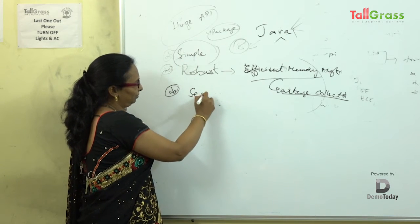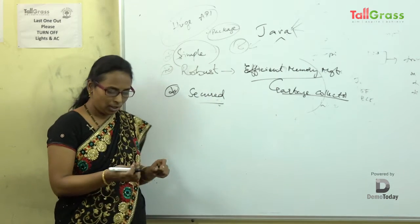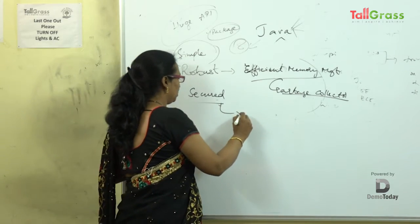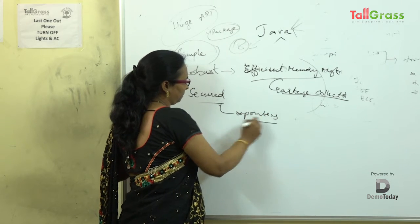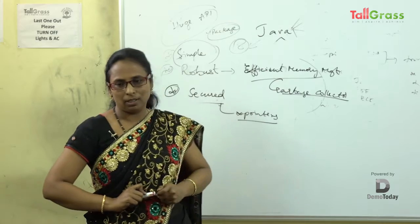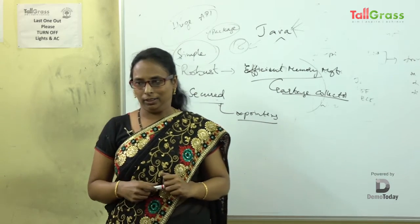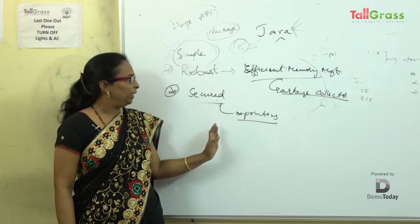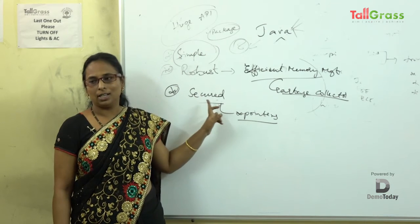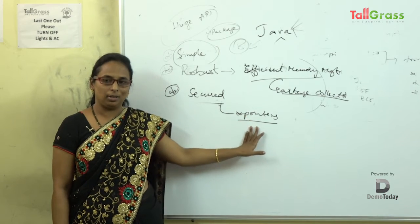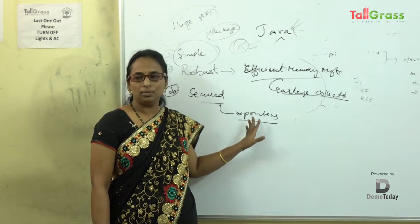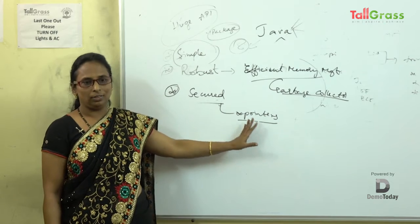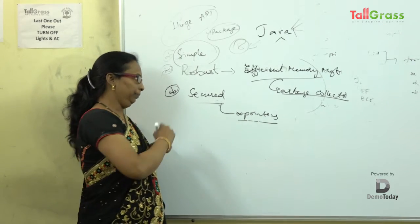The next feature: Java is secure. What makes it secure? In Java, we do not have the concept of pointers. While learning C, your faculty might have told you that pointers are an awesome concept. But in Java, since pointers are not there, Java is secured. The ultimate reason is that pointers are not secure because they are focused on addresses, and if the address changes, the values may also change.